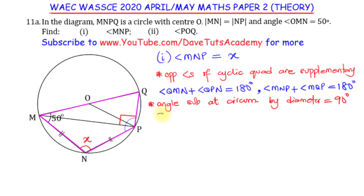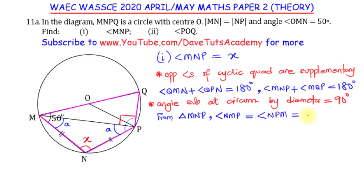What is the implication of MN equal to NP? From triangle MNP, this particular angle and this particular angle are going to be equal. If I call this A, this will also be A — because they are base angles of an isosceles triangle. Isosceles because two of its sides are equal, so the base angles are also equal. I can say angle NMP is equal to angle NPM, and I denote that as A.